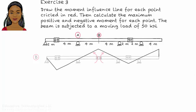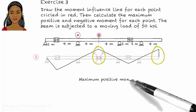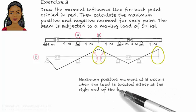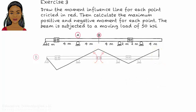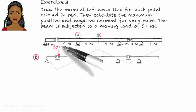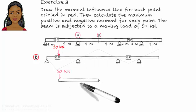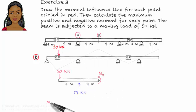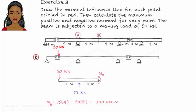A close inspection of the influence line reveals that the maximum negative moment at B occurs when the load is at the leftmost hinge on the beam, and the maximum positive moment at B occurs when the load is at the right end of the beam and at B. This gives a bending moment of negative 100 kNm for point B.